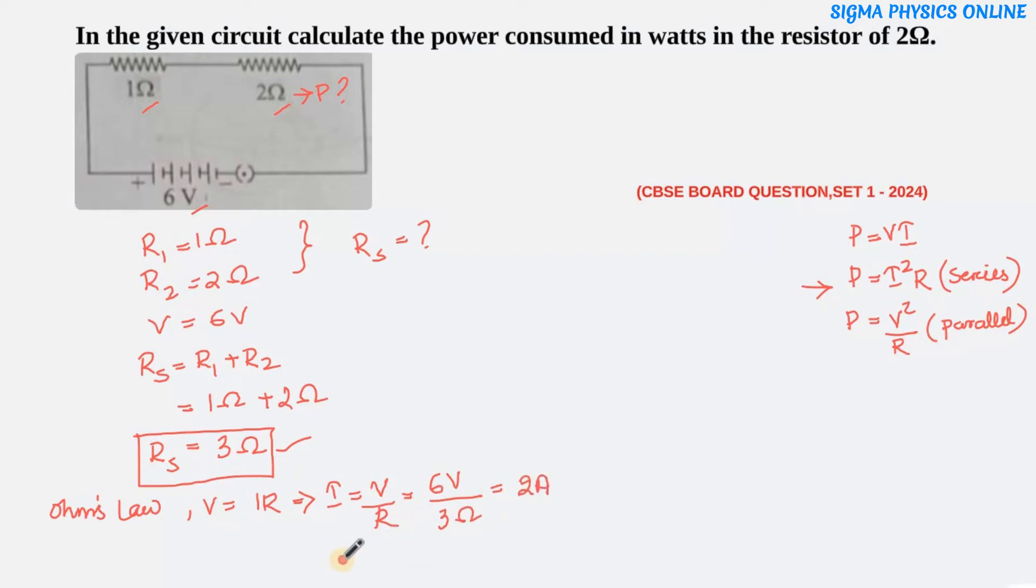Now that we have the current, let's find the power consumed by the 2 ohm resistor. Power = I²R. I is 2, so 2² = 4. For R, we'll use 2 ohm, not the total resistance, because the question asks for power consumed in the 2 ohm resistor specifically. So 4 × 2 = 8 watt.